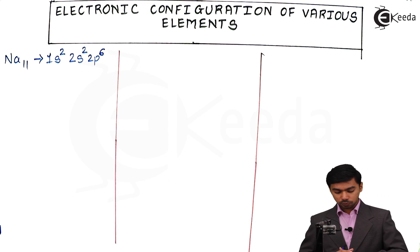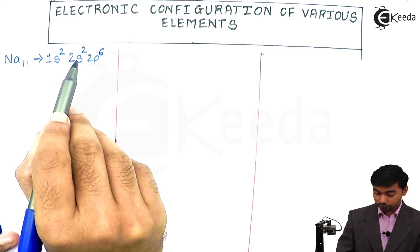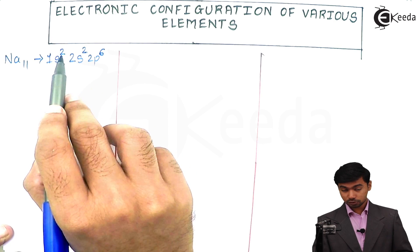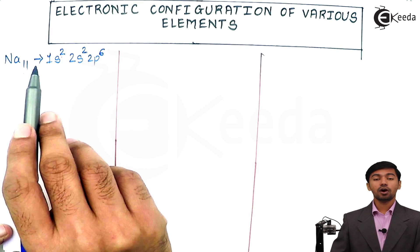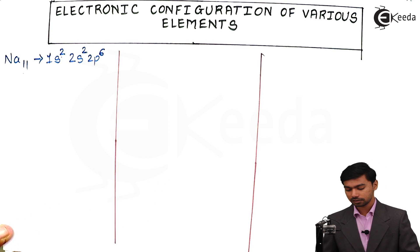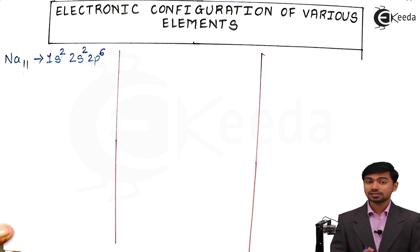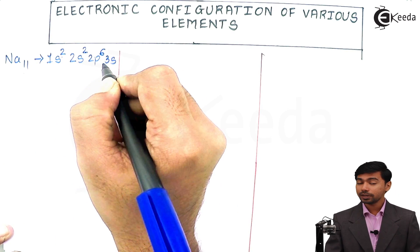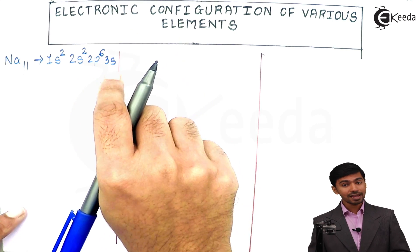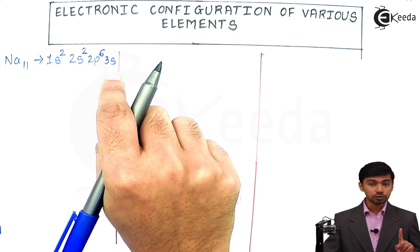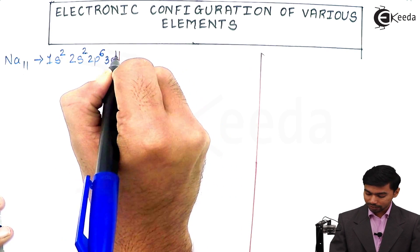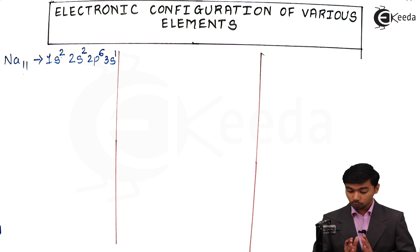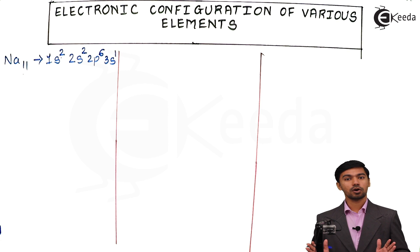So how many electrons have we arranged? 2 from 1s, 2 from 2s, and 6 from 2p — that's 10 electrons. Out of 11, we've arranged 10, so one electron is still remaining. After 2p, according to the Aufbau pyramid, comes 3s. Though the capacity of s is 2, only 1 electron remains, so we place 1 electron in 3s. That gives us all 11 electrons of sodium arranged.